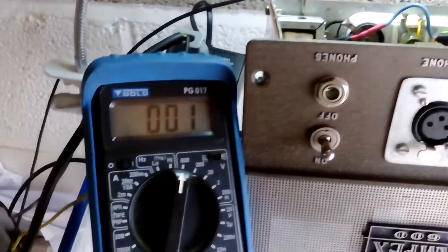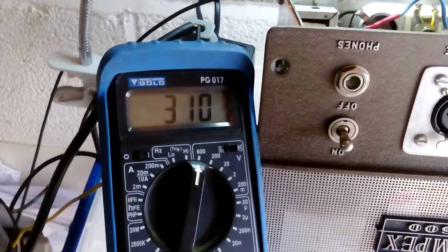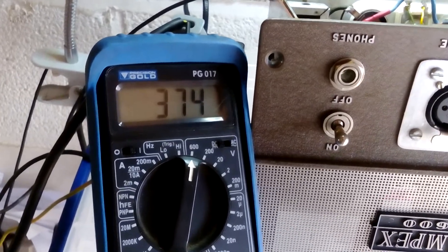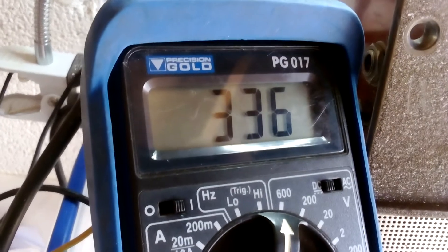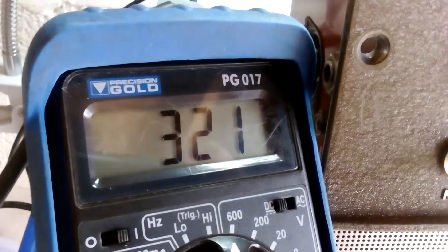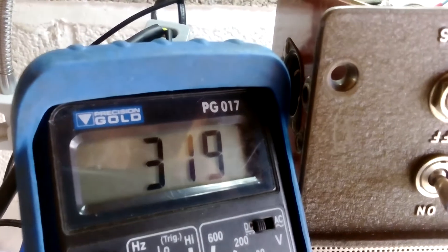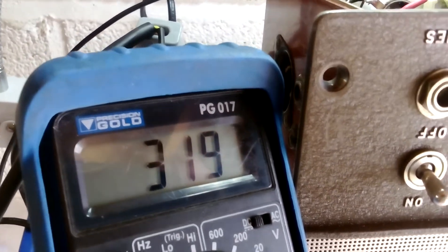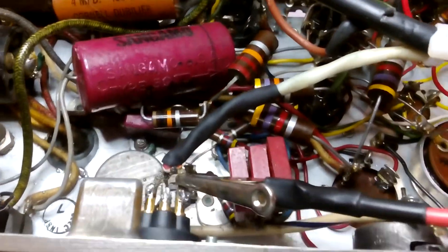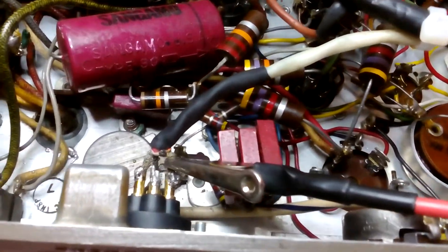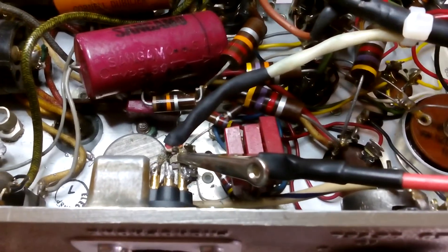As you can see, the voltage is shooting up, shoots right up, and then the valves kick in and start to stabilize. We're looking at around about 320 volts DC. That's 320 volts running into the microphone, DC voltage, extremely dangerous.